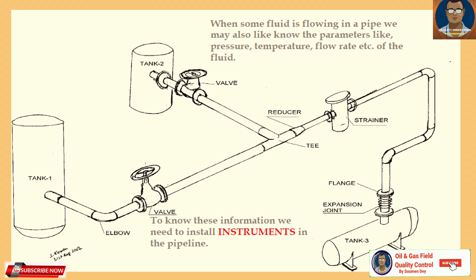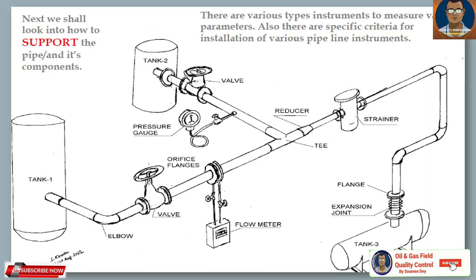When fluid is flowing in the pipe, we may also want to know parameters like pressure, temperature, and flow rates — so we need some kind of meter or gauge. To know this information we install instruments in the pipeline. There are various types of instruments to measure various parameters, and specific criteria for installing them. Here we have installed a pressure gauge to monitor pressure, and a flow meter where we can see the rate of flow per minute or per second as required.